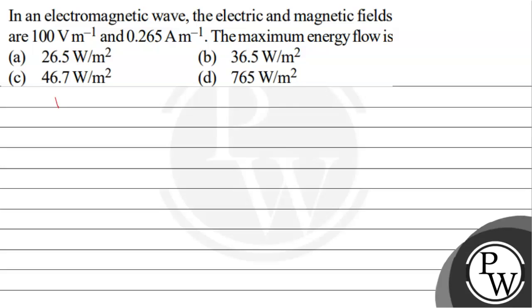The key concept is that the maximum energy flow per meter square is given by the formula S equals E₀ times H₀, where H₀ is the magnetic field and E₀ is the electric field.